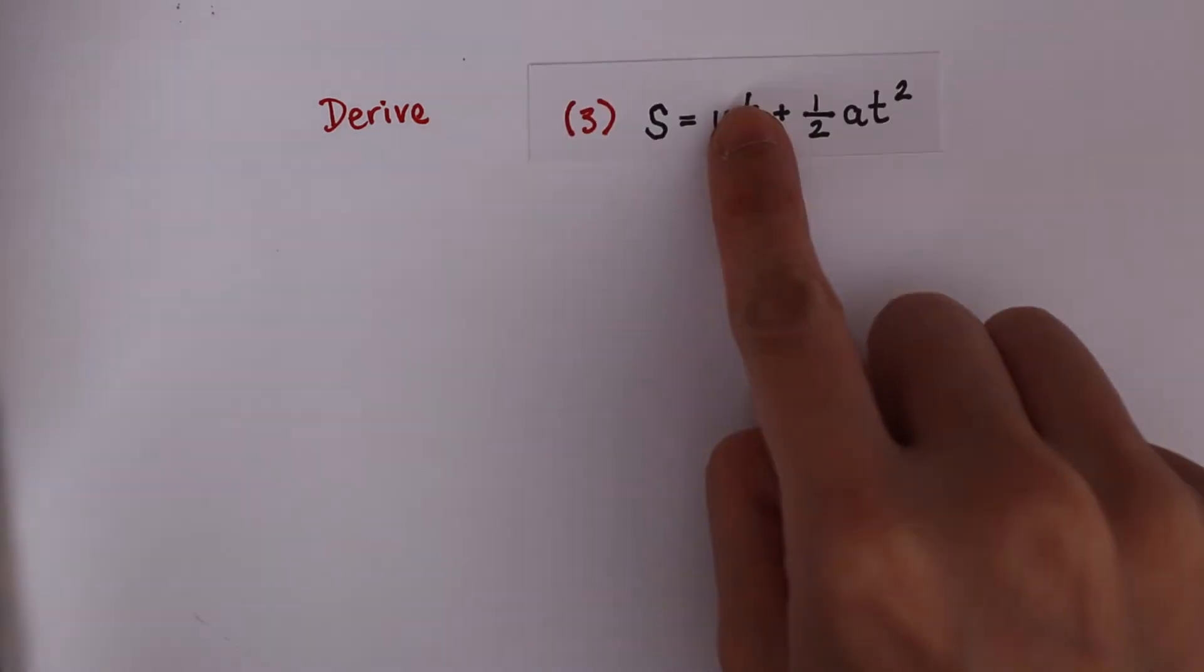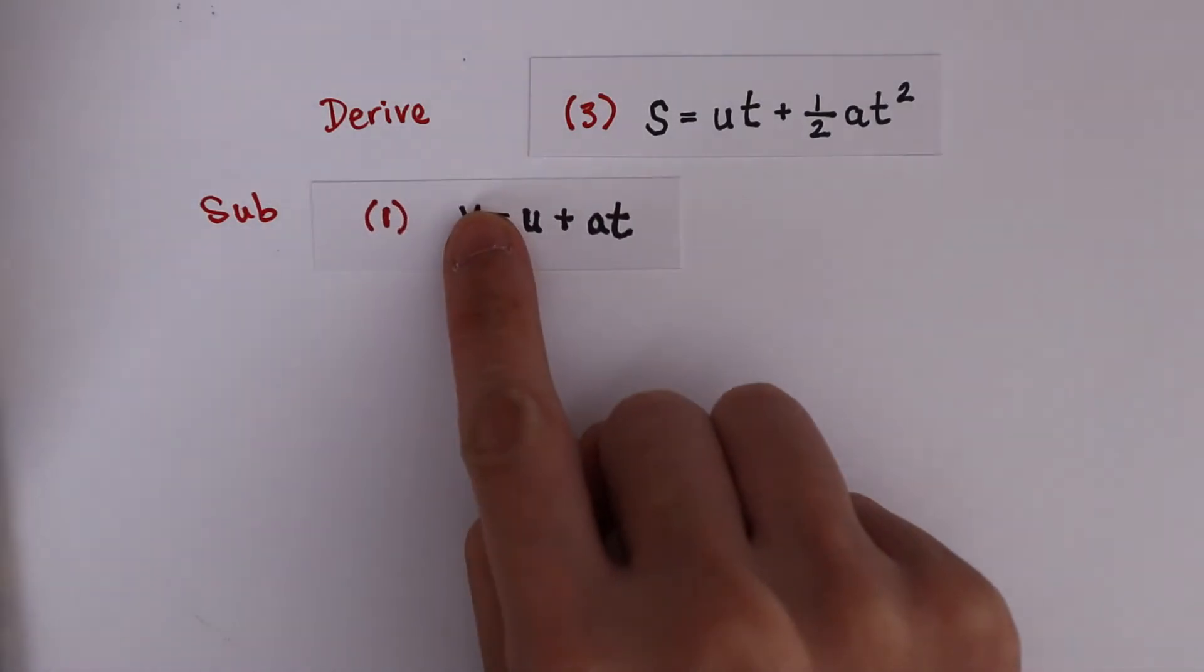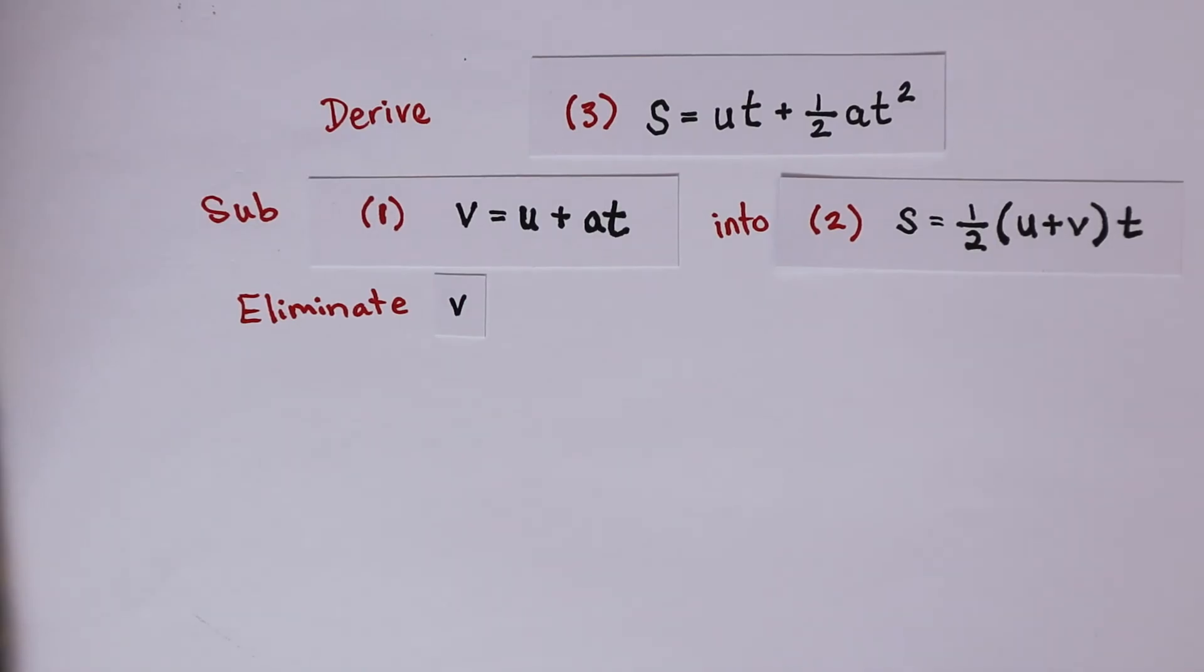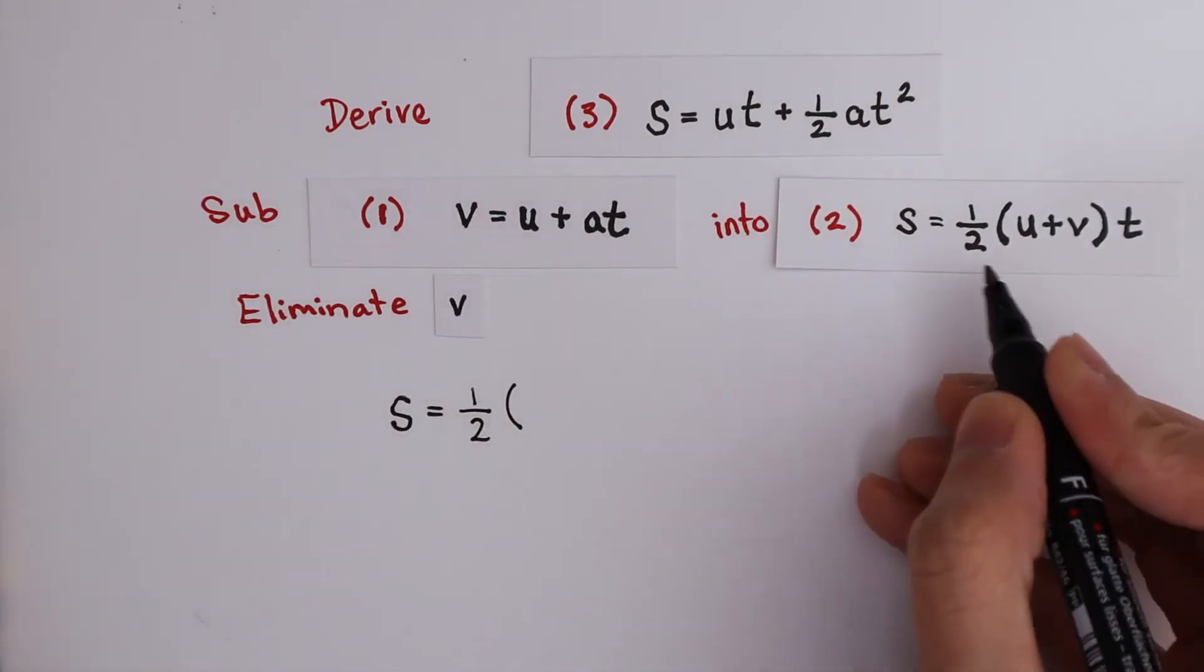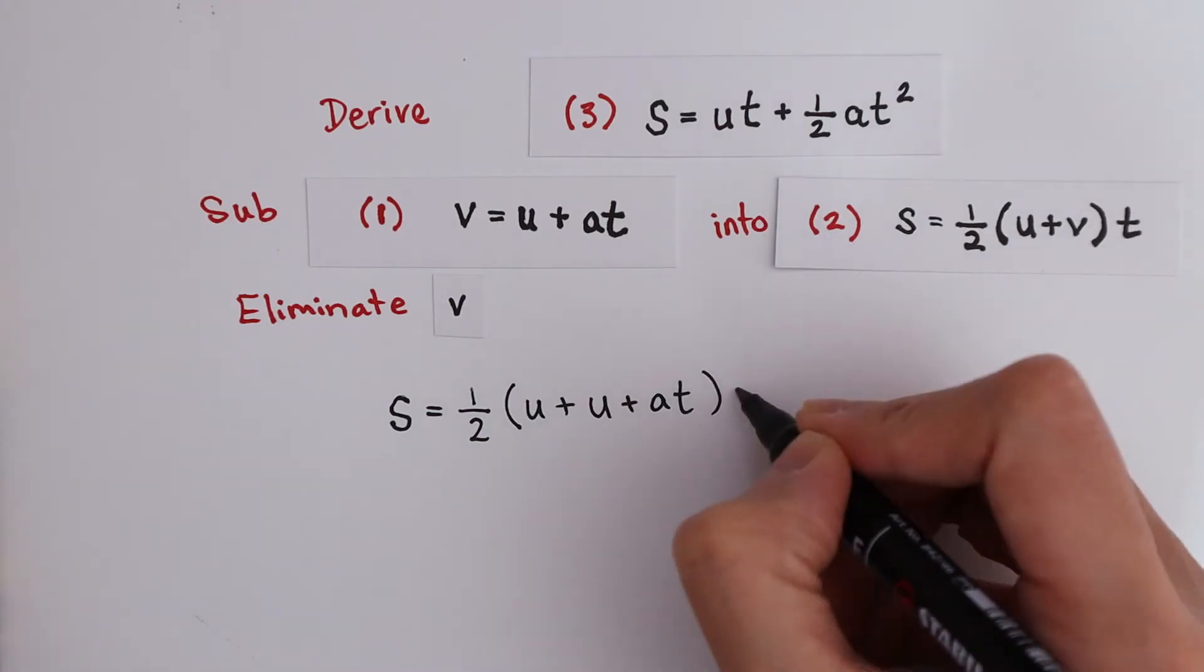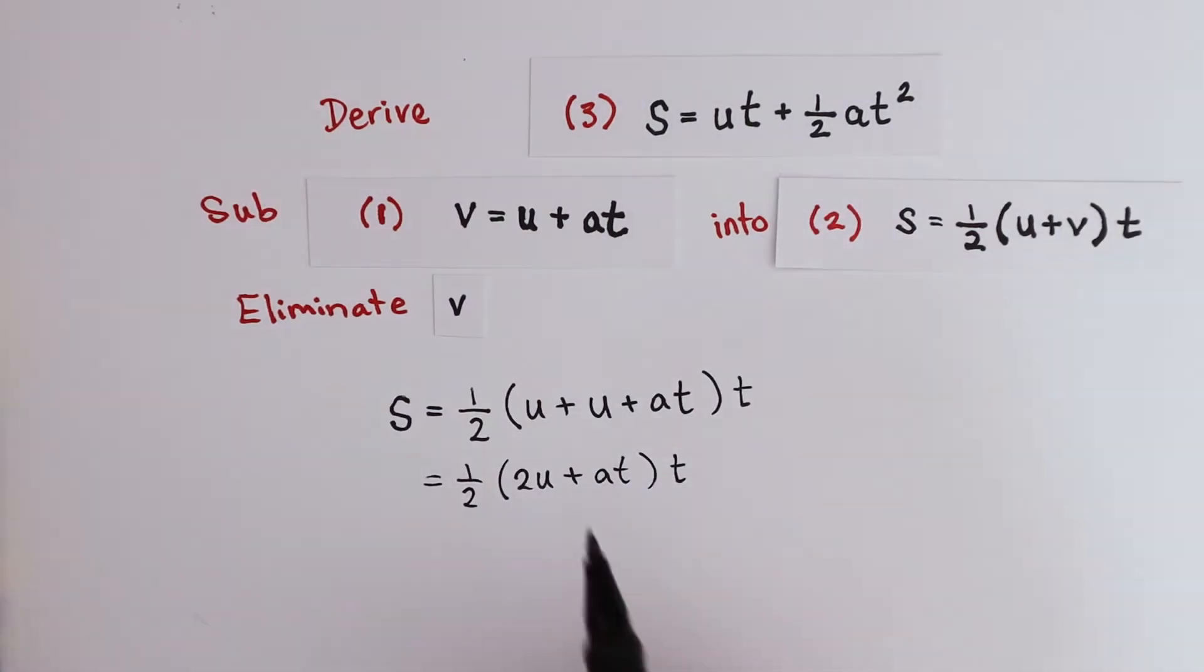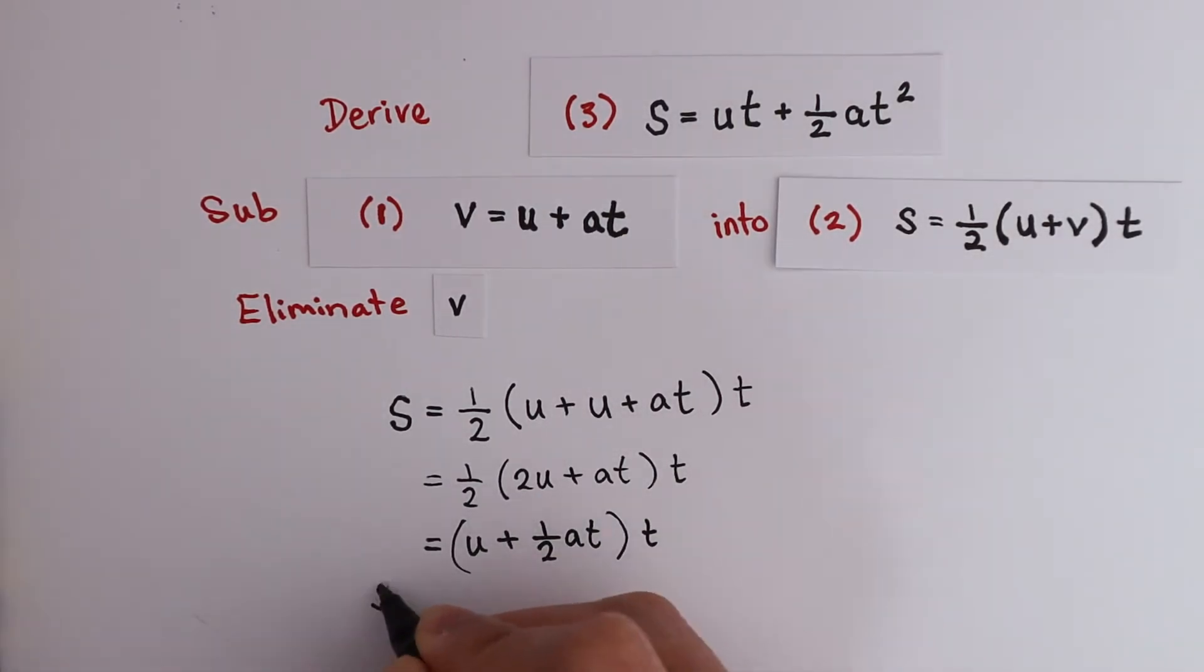For equation 3, final velocity is not part of the equation. We can take equation 1 and substitute it into equation 2 to eliminate final velocity, v. By substituting equation 1 into equation 2, we get displacement s is half u plus u plus at bracket times t. The bracket gives us 2u plus at. Then we can simplify it down to u plus half at bracket times t. So finally, we get s is ut plus half at squared.